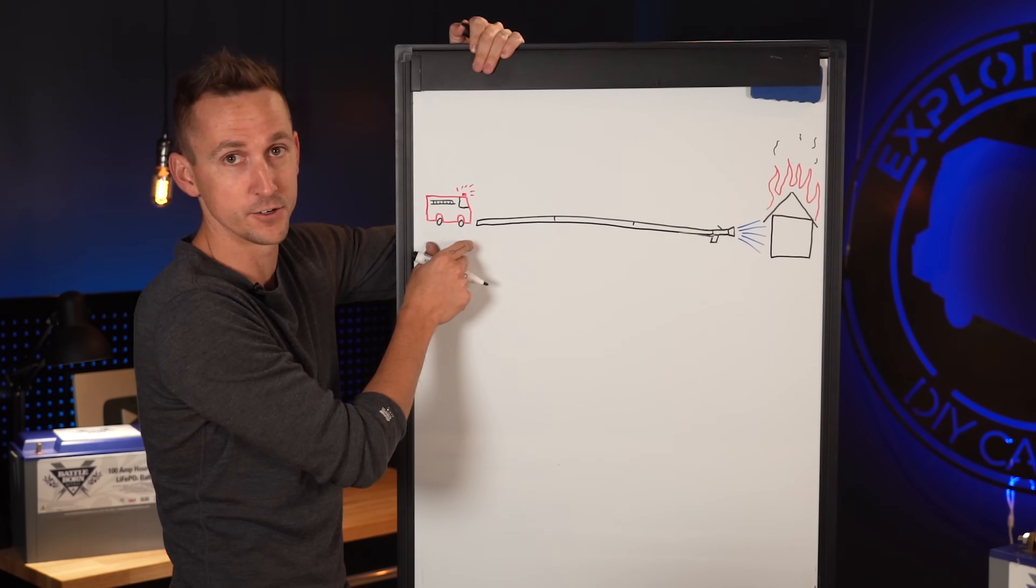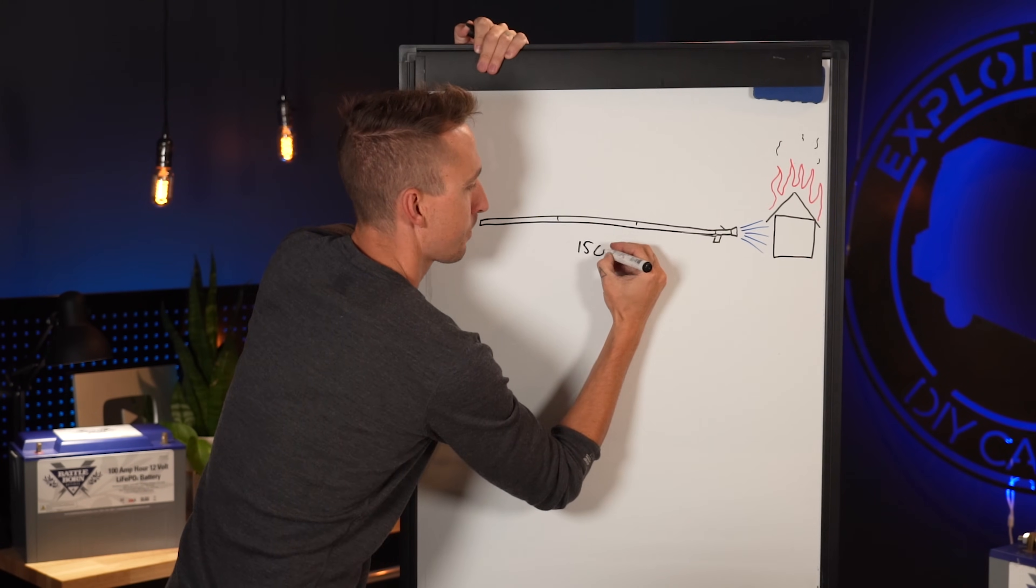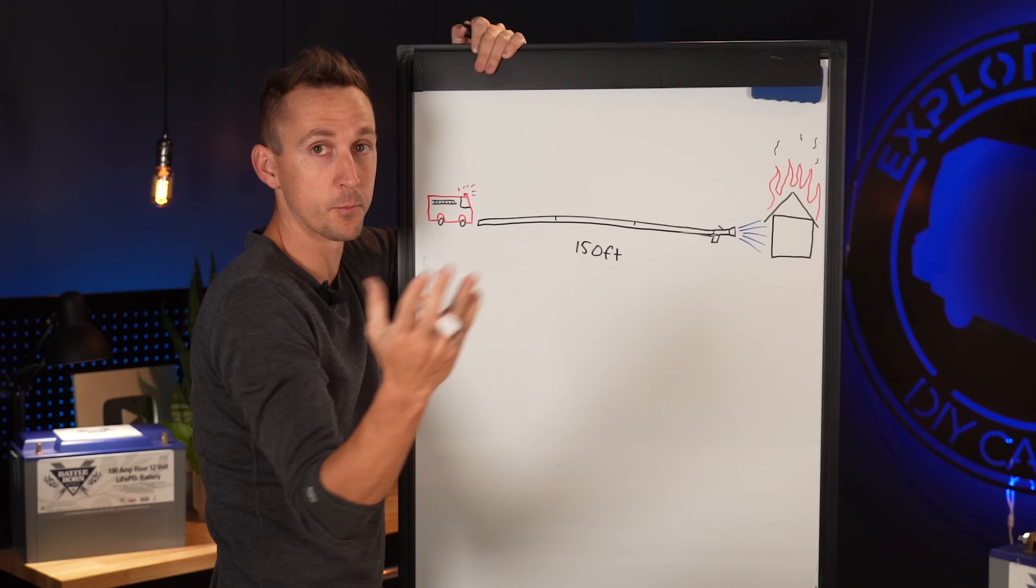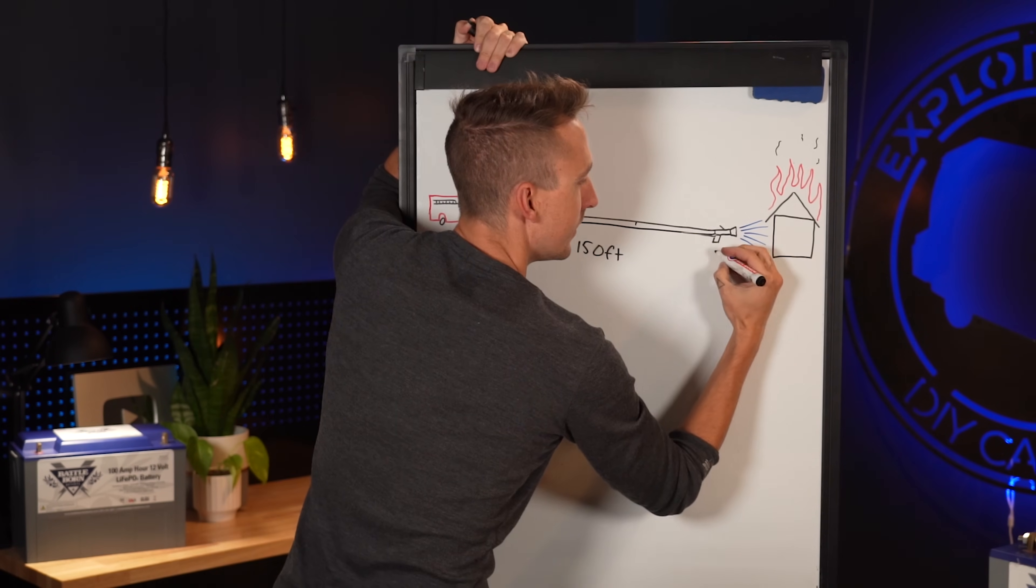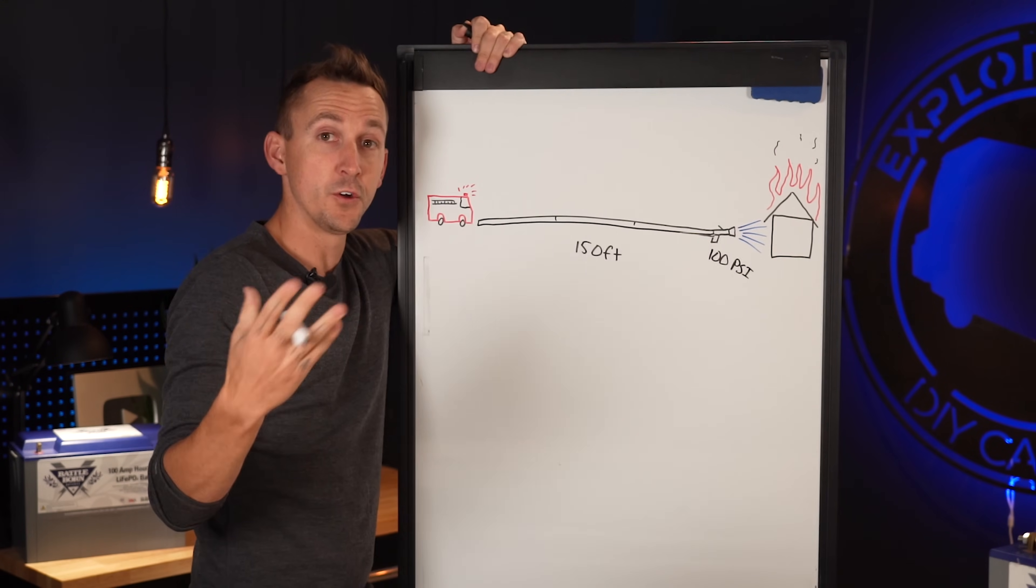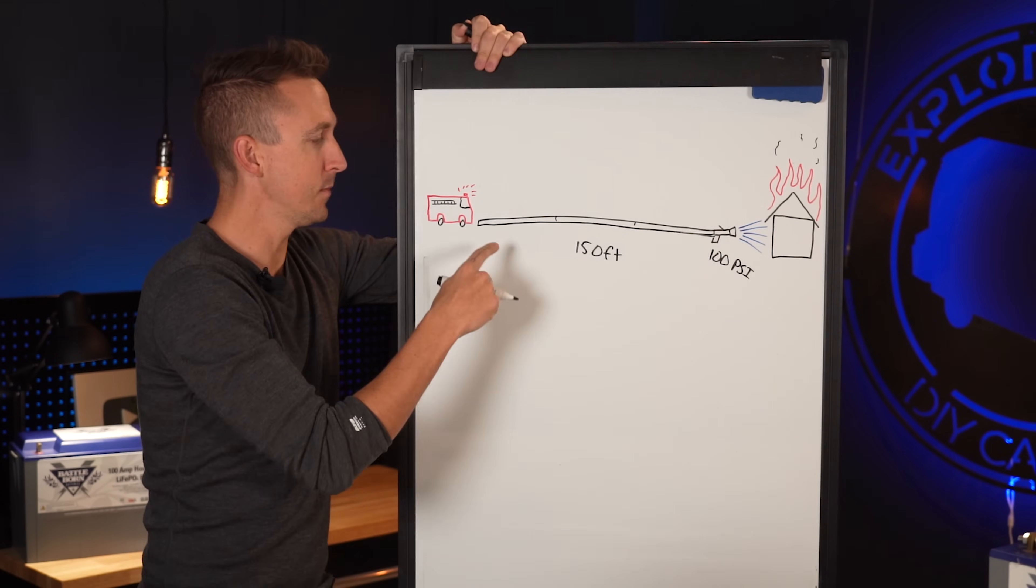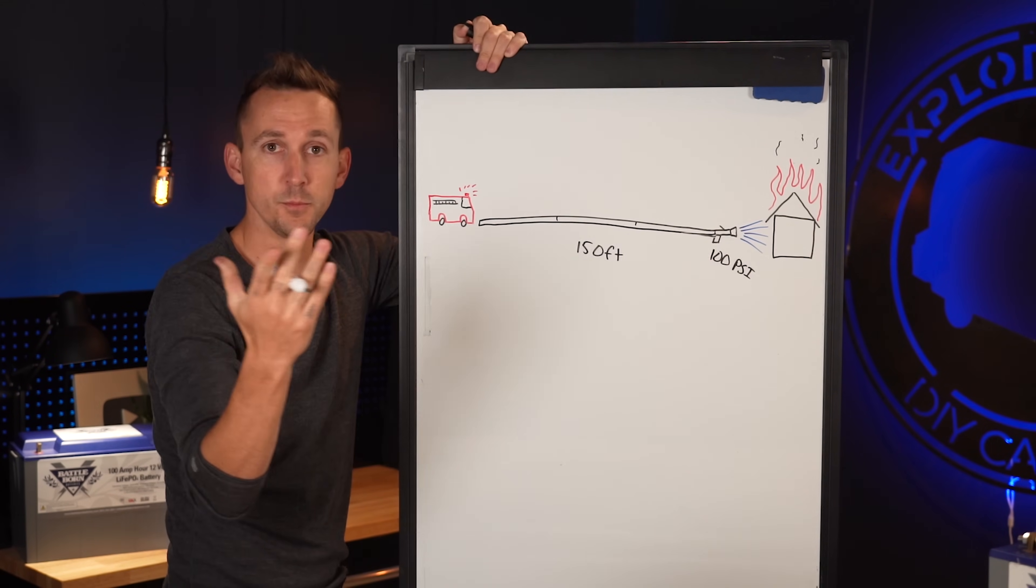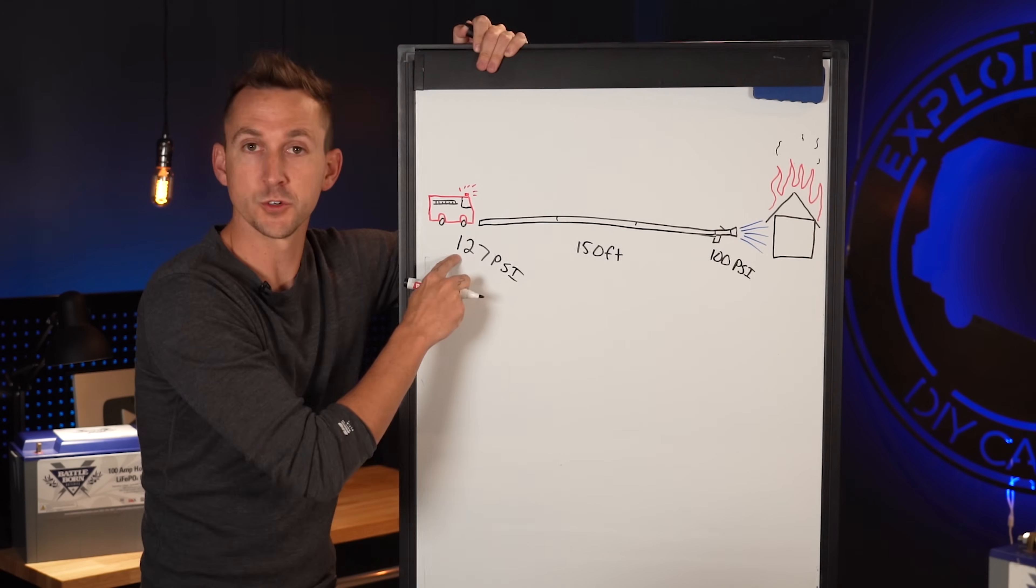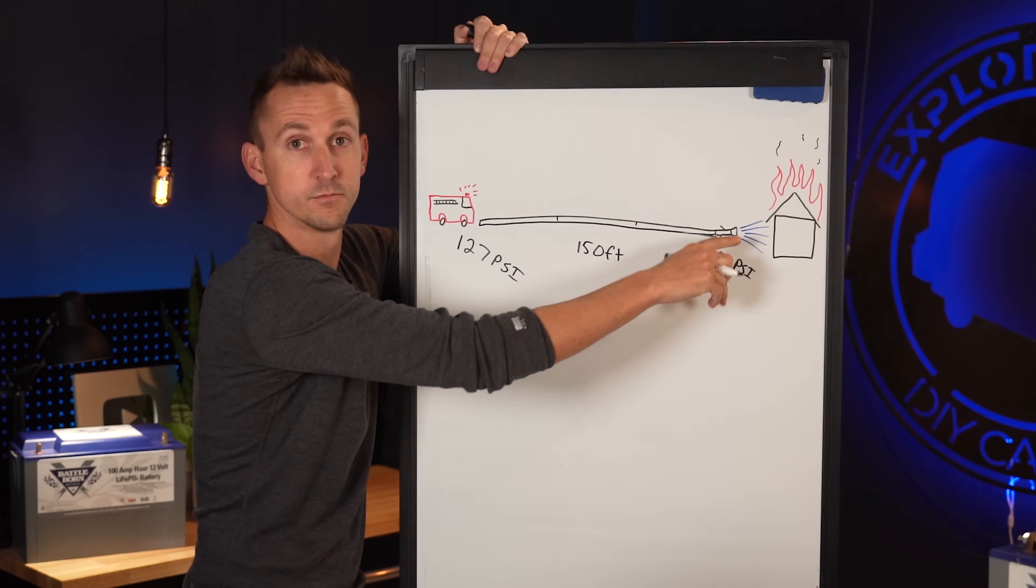We have a house fire and we have a fire truck and we have 150 feet of hose right here. Now our nozzles on the fire trucks needed to be operated at about 100 psi so that they would operate properly and flow the recommended amount of water out of the end of it. That meant that on this end we needed to be pushing 127 psi from the pump through this hose to the nozzle to squirt water on the fire.